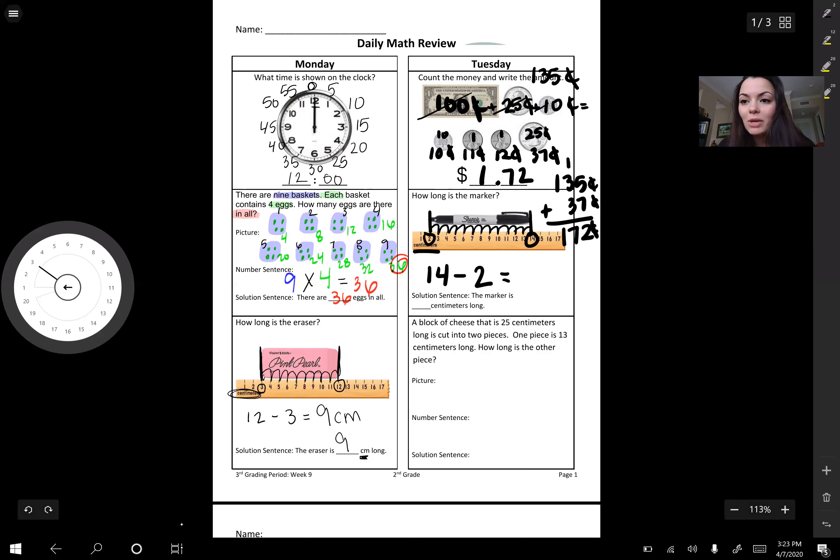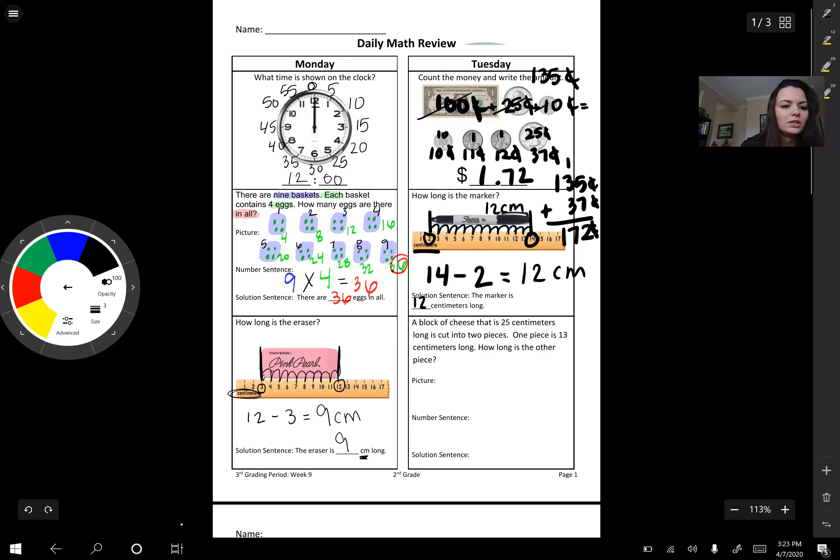If I check my work, I got 12 centimeters there. If I check my work, so that way I know that I got it right for sure. 14 minus two. If I start at 12 and I take away two, 12, 14, 13, 12. Okay, so that was two taken away and it is 12 centimeters is the answer.